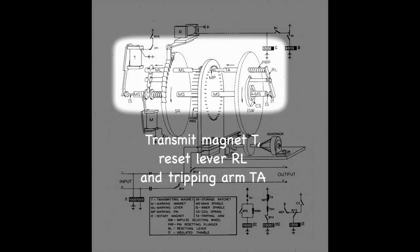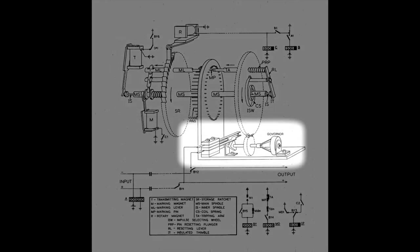Transmit magnet T moves a long pin inside the spindle from left to right. That tilts the reset lever. And that lever pushes the marking pin back with the tripping arm TA. This allows the pulsing wheel to rotate to the next pin. The pulsing wheel is geared to a smaller wheel that operates the interruptor, and the speed of rotation is kept constant by the governor.